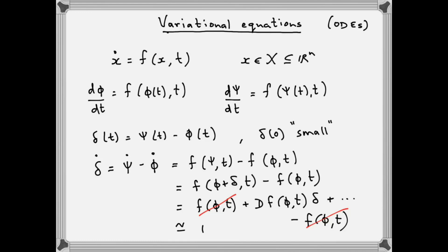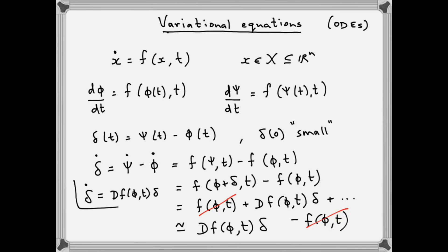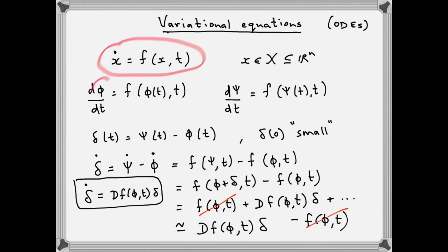We're left with an approximate differential equation for delta. Notice that the expression Df(phi(t), t) is a linear map which depends on time. This differential equation is referred to as the variational equation of our original differential equation, about the solution phi.